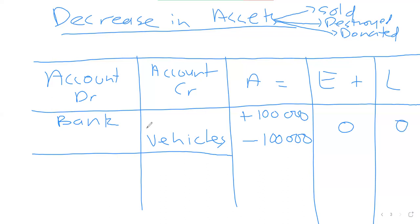Because we are selling this asset, vehicles are credited — assets are decreasing — so on the asset column I'll see a decrease of 100,000. On equity it's zero, on liabilities it's zero. You've sold the vehicles, so they are reducing. At the same time, we are receiving money which is an asset to the business, so we debit bank. Hence you see a plus 100,000 on the asset column and a minus 100,000 for the vehicle sold.